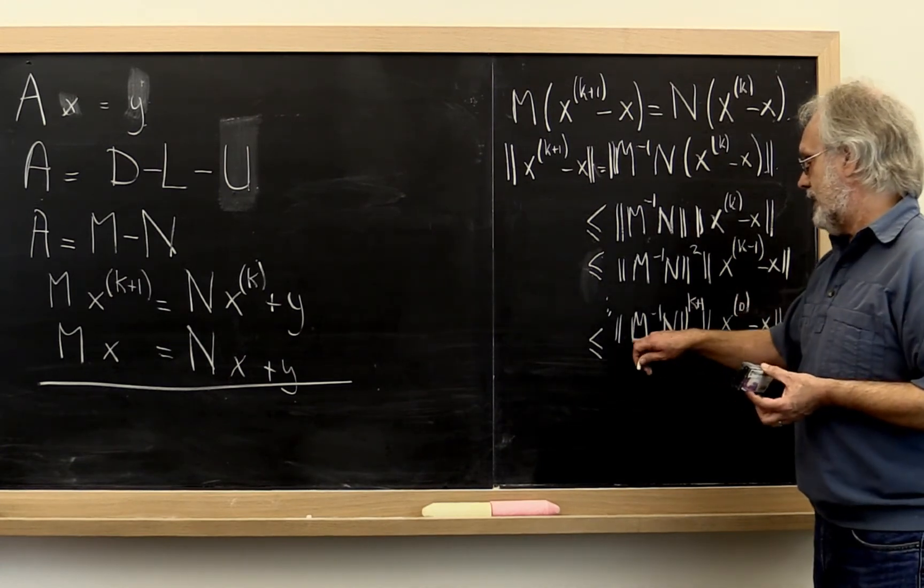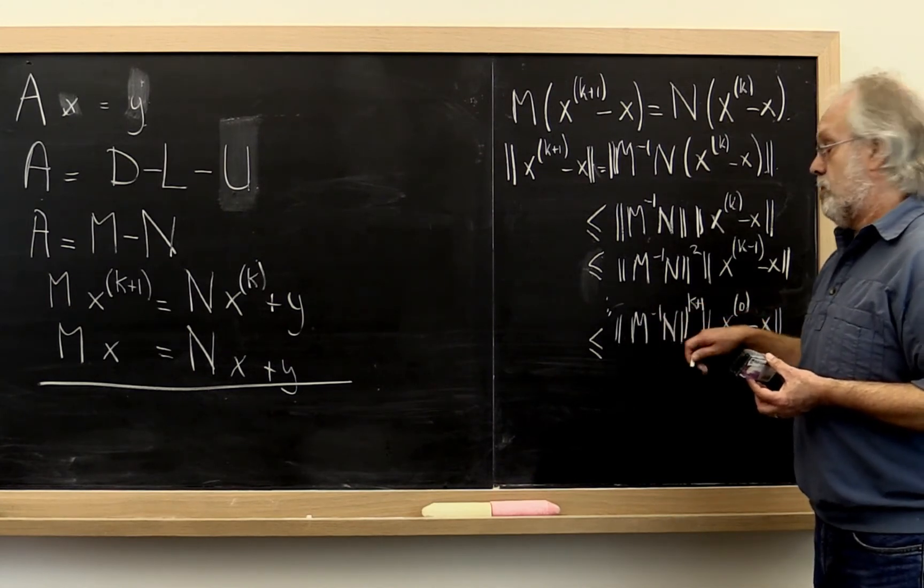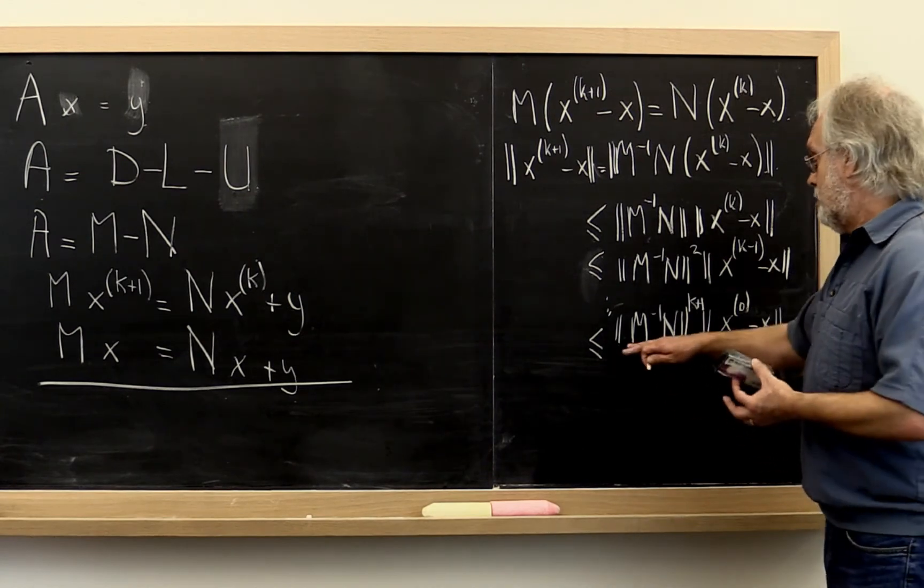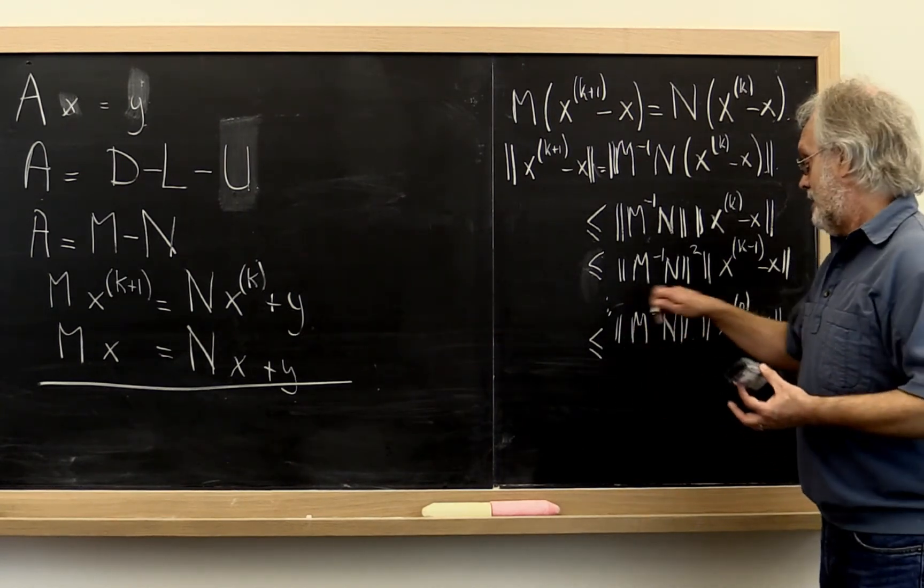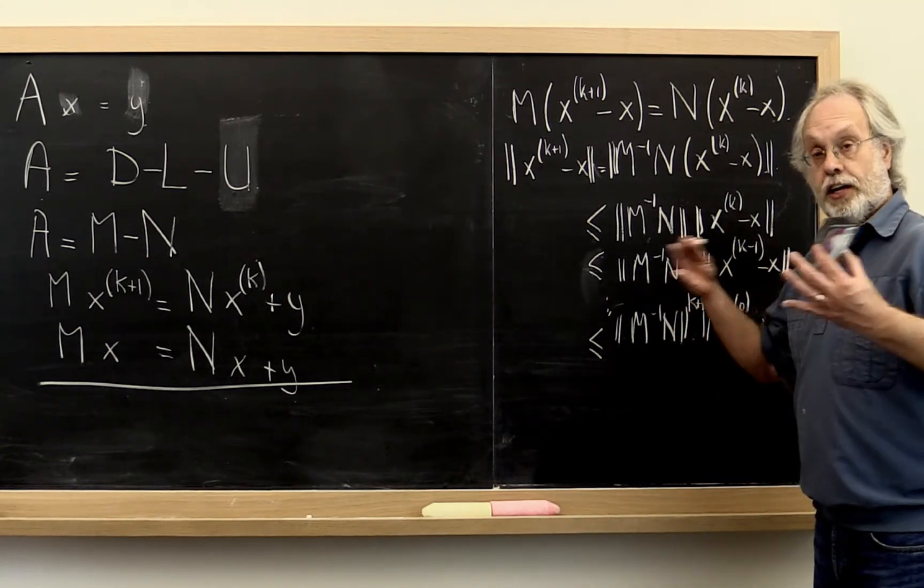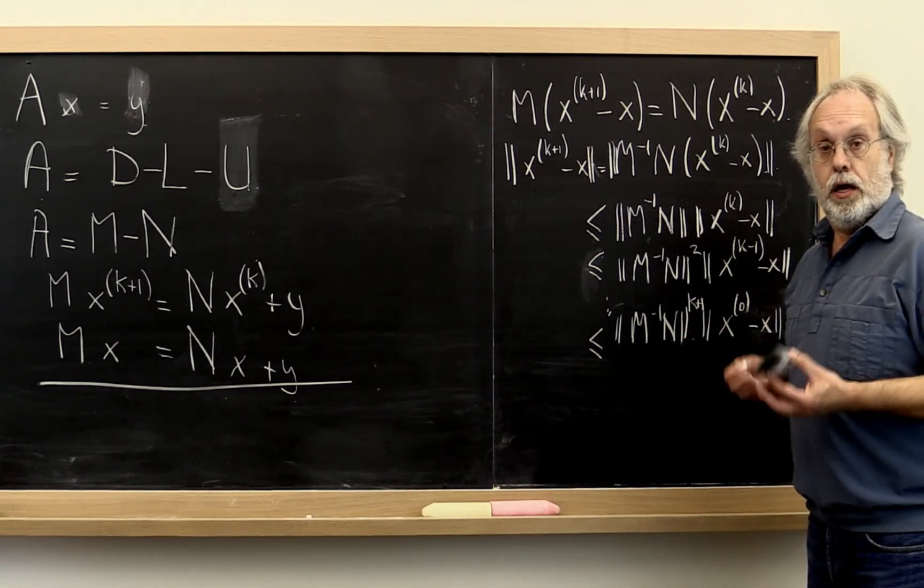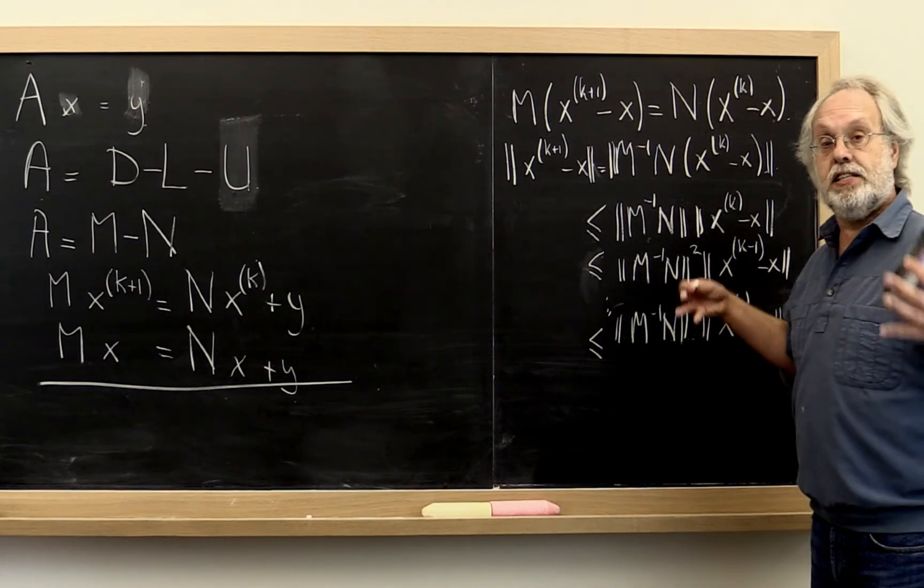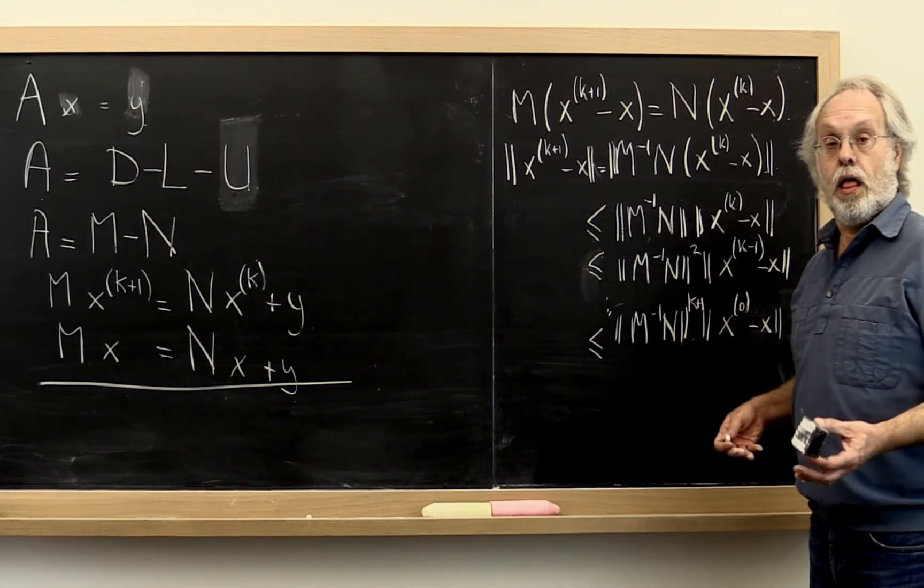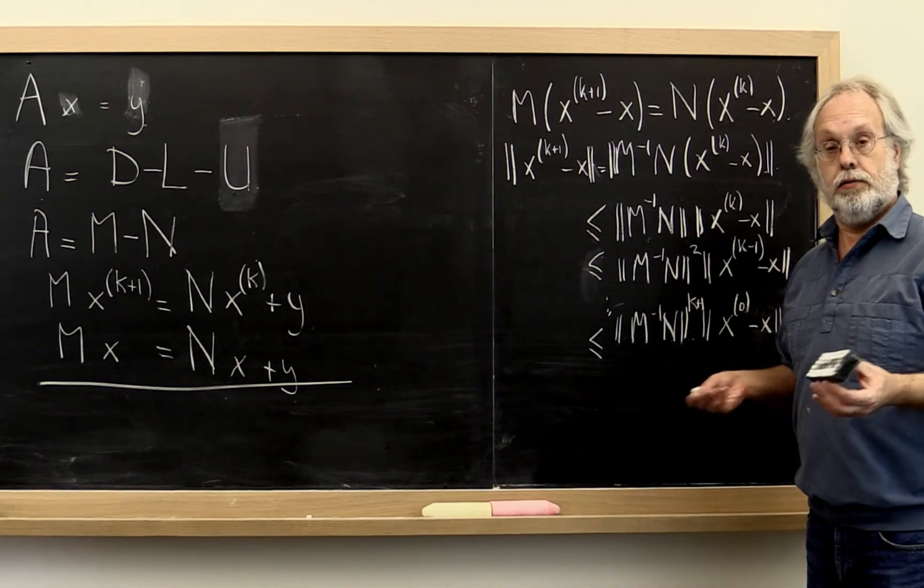But actually it's a little bit simpler than that. If for any matrix norm, M inverse N in that norm is less than 1, then we know that in that norm this quantity goes to 0. And then by equivalence of norms, we know that every other norm, that quantity goes to 0 as well. And therefore if we can find some norm for which we can prove that M inverse N in that norm is less than 1, then we know that our splitting method actually converges.